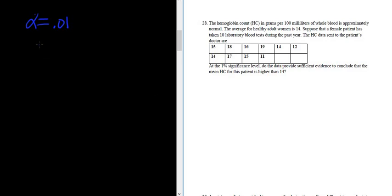So this is a hypothesis test for a single mean. The very first step is to set up the null and alternative hypotheses. So in this case, we want to see if the mean is higher than 14. So mu greater than 14, that will be H1. And then H sub 0 is always equals. So mu equals 14.